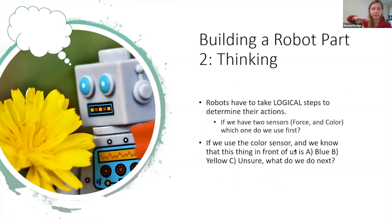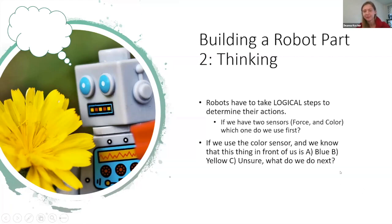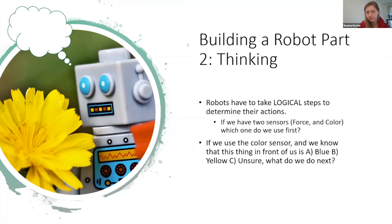If an object is really hard it gets a really high force reading; if it's really soft it gets a lower force. Once we scan for color, we decide whether to use the force sensor. If the object in front of us is blue, should we use the force sensor? Our flower is not blue, so we'd probably just move on — don't waste the robot's time. What if the object is yellow — should we use the force sensor?